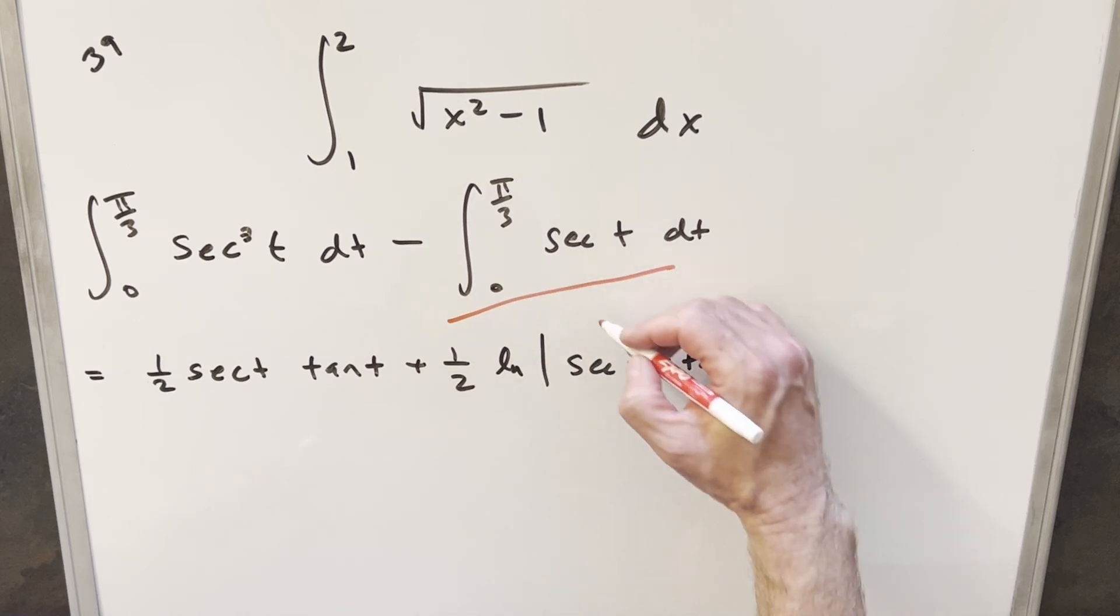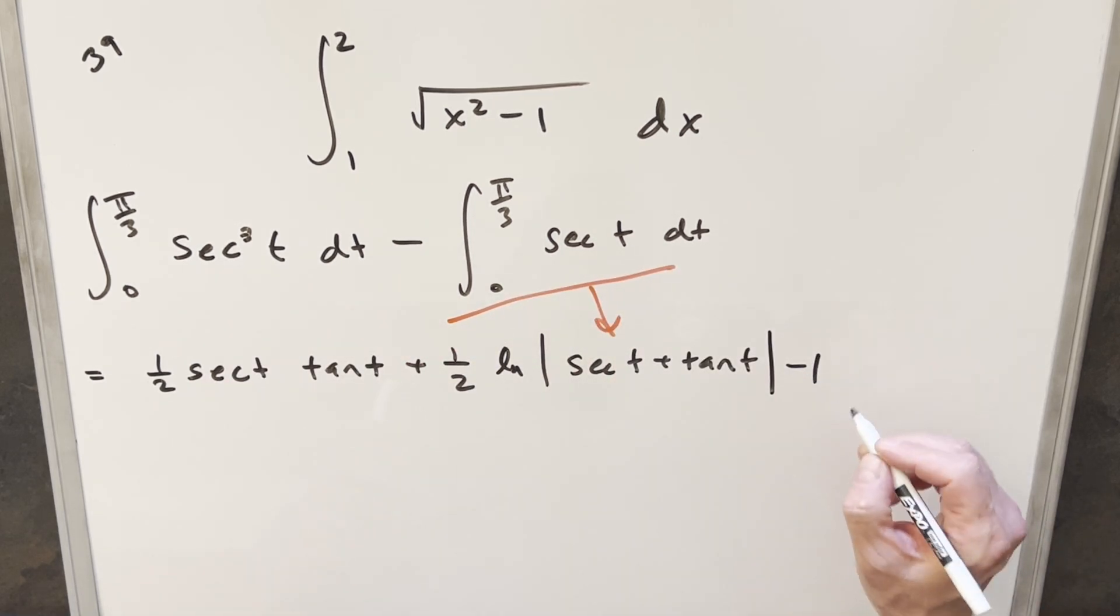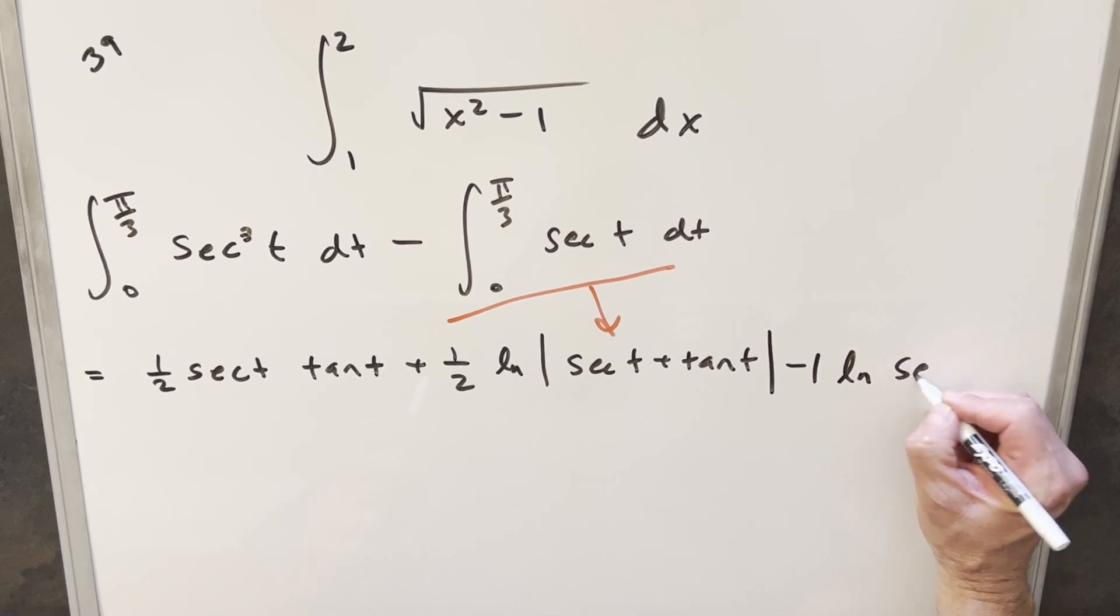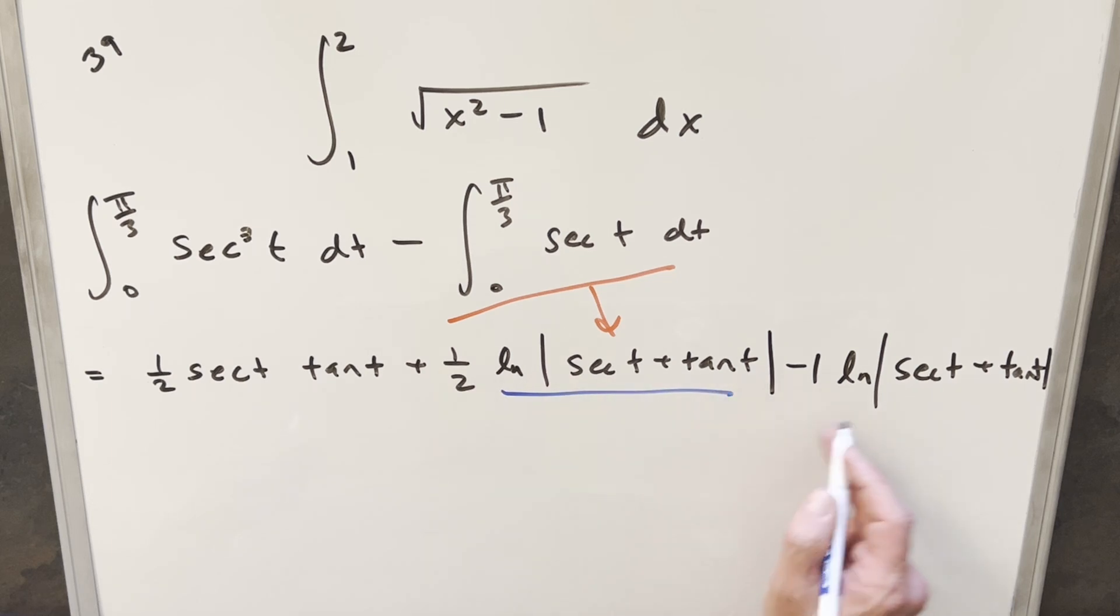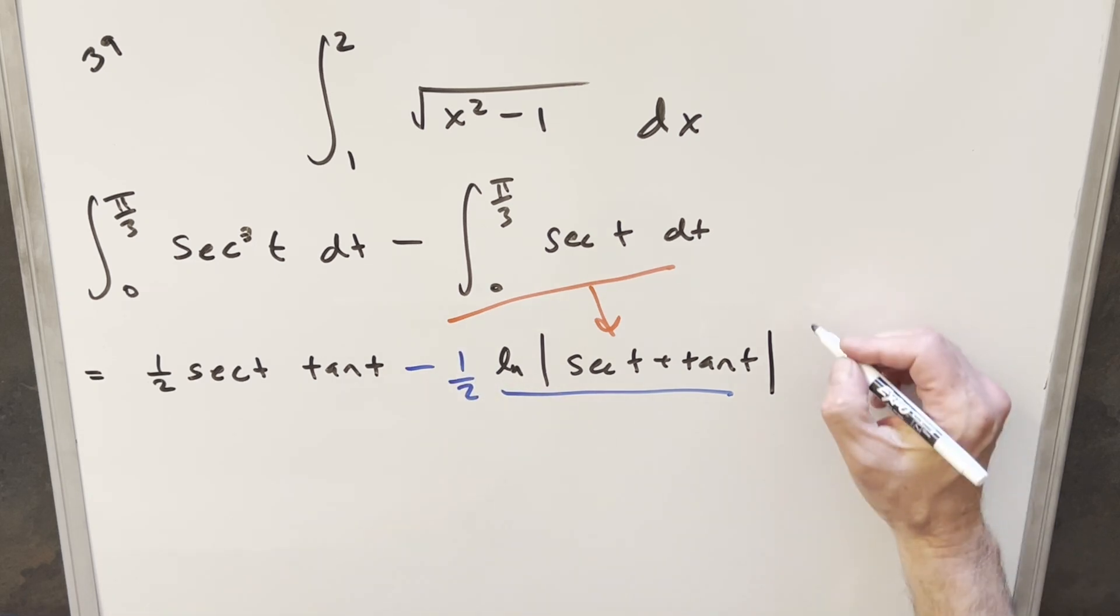And so again, this integral right here is going to be basically the same as this. So we're going to have now the minus sign, we'll have minus 1 of this same stuff, secant t plus tan t. But now because I have a half of these here, minus 1 of these here, I can just combine these and write this as a minus 1 half right here. And then we just need to evaluate this from 0 to pi over 3.